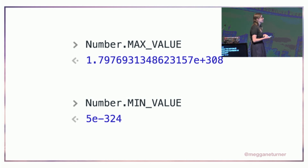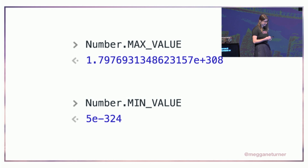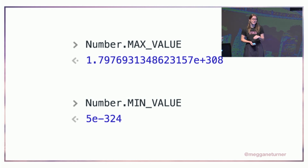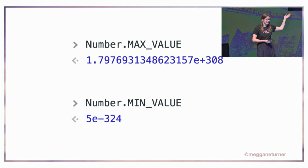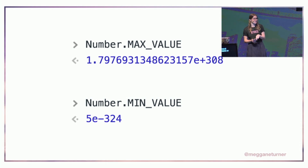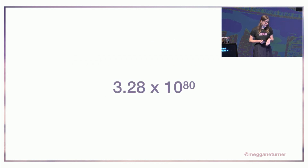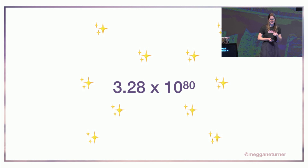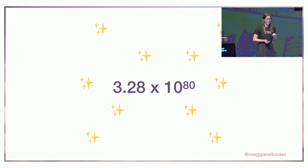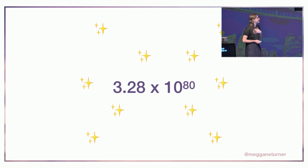For really big numbers, we have naming conventions — like a million, a billion, a quadrillion. Those naming conventions go all the way up to a centillion, which is followed by 303 zeros. So JavaScript actually exceeds naming conventions — that's a massive range. If you're still not convinced, 3.28 times 10 to the power of 80 is the number of particles in the universe. So if you're using any numbers bigger than that, what are you doing? We have no business using numbers greater than that maximum number.